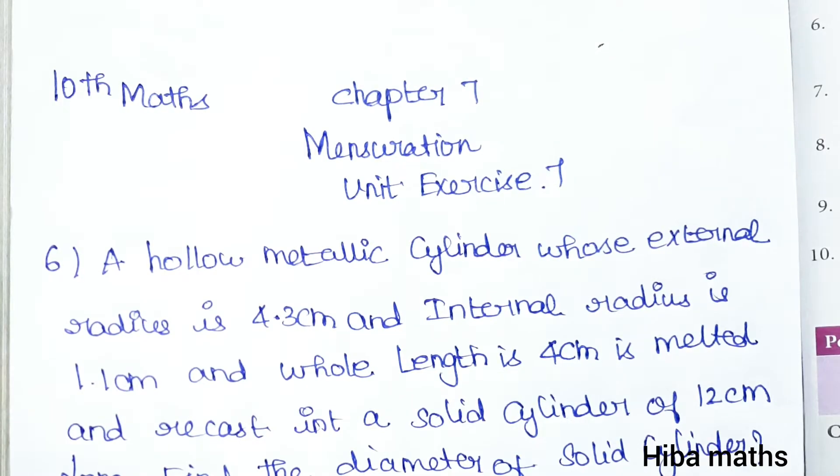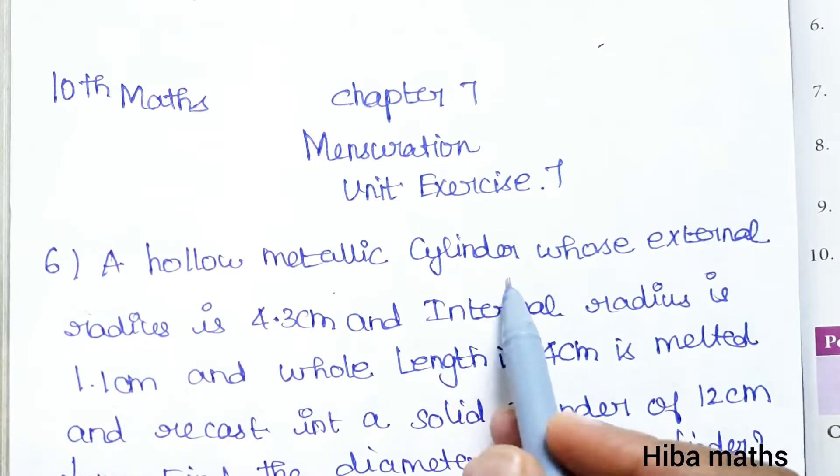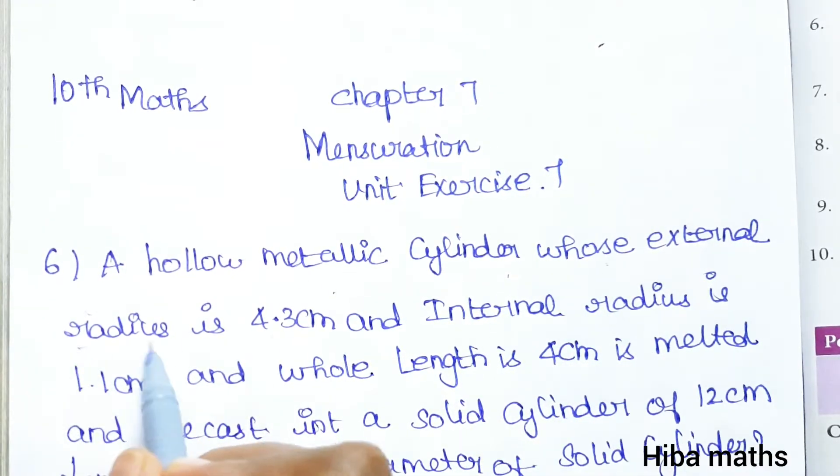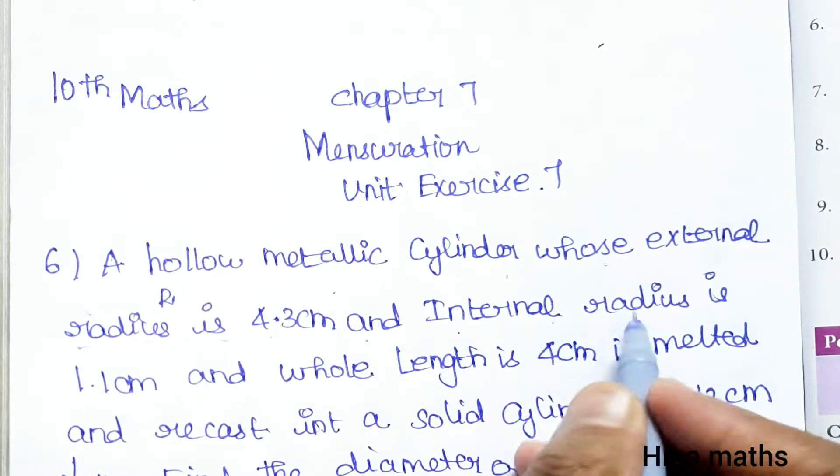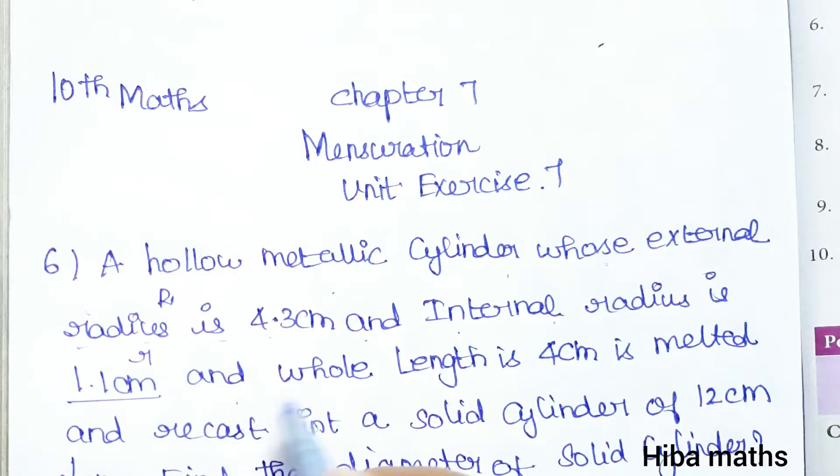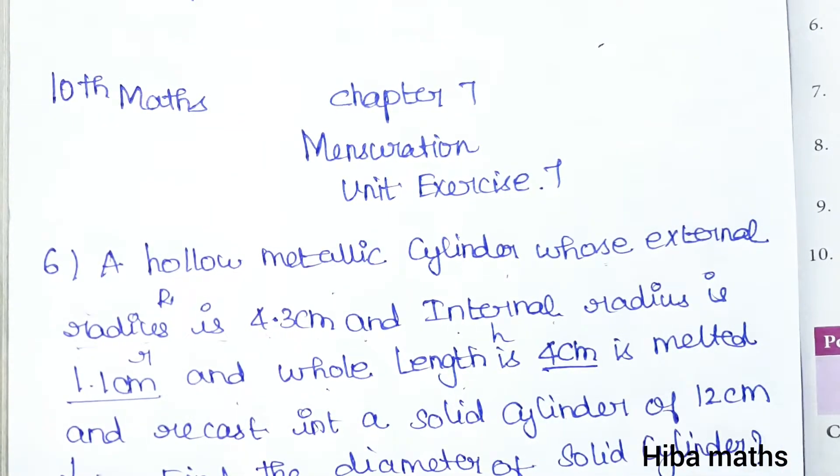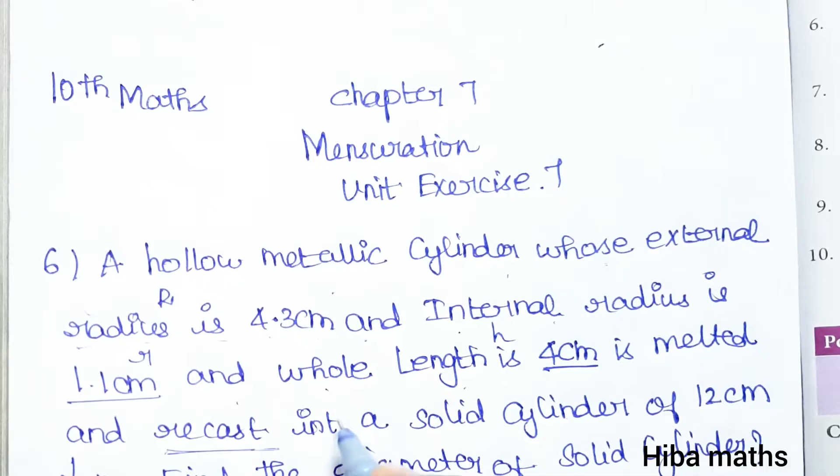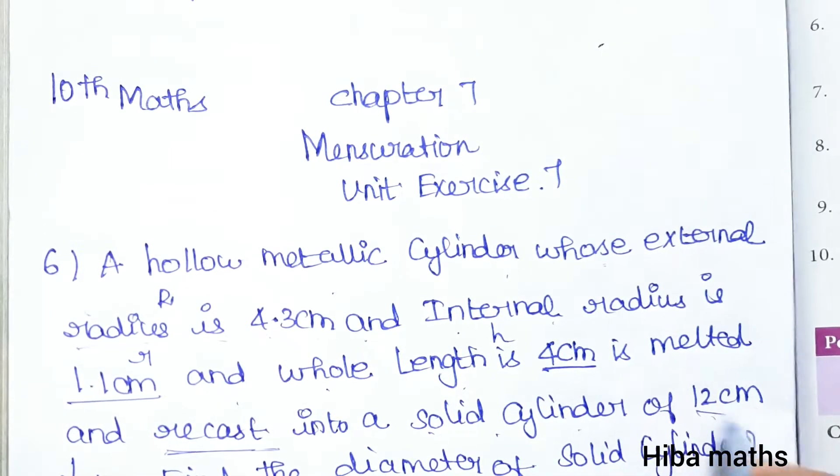Hello students, welcome to Hiba Maths, 10th standard maths, Chapter 7 Mensuration, Unit Exercise 7, question 6. In this video you will see a hollow metallic cylinder whose external radius is 4.3 cm and internal radius is 1.1 cm, and whose length is 4 cm. The height is melted and recast into a solid cylinder of 12 cm long.